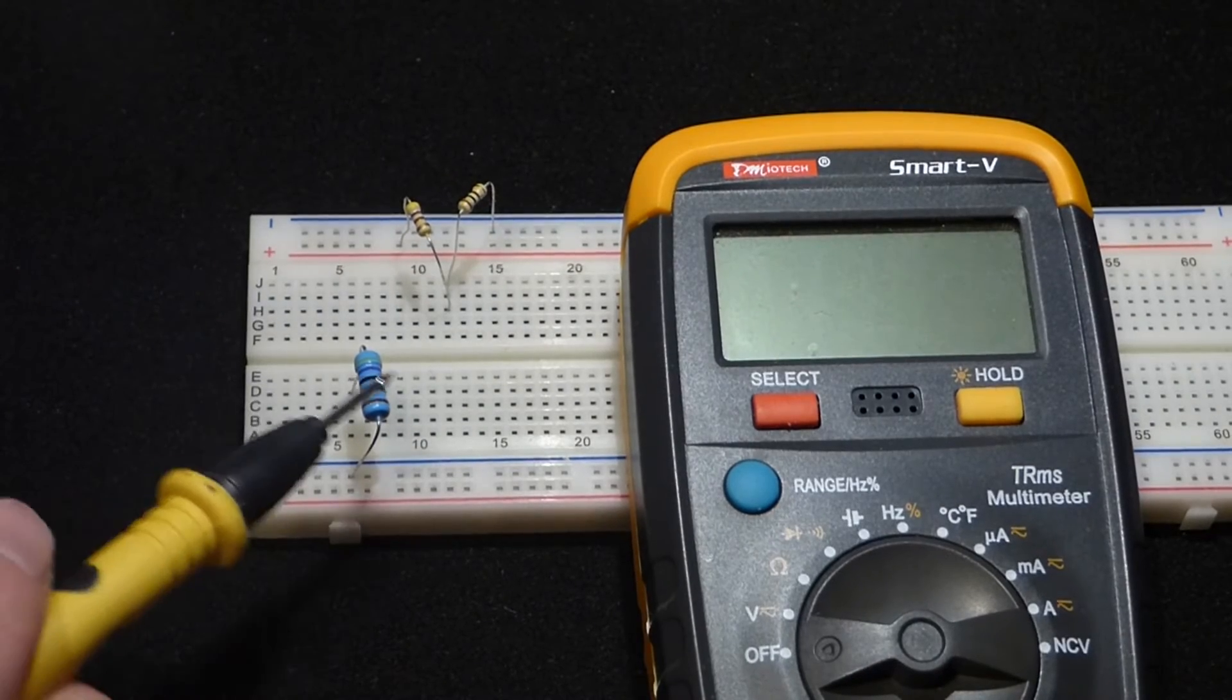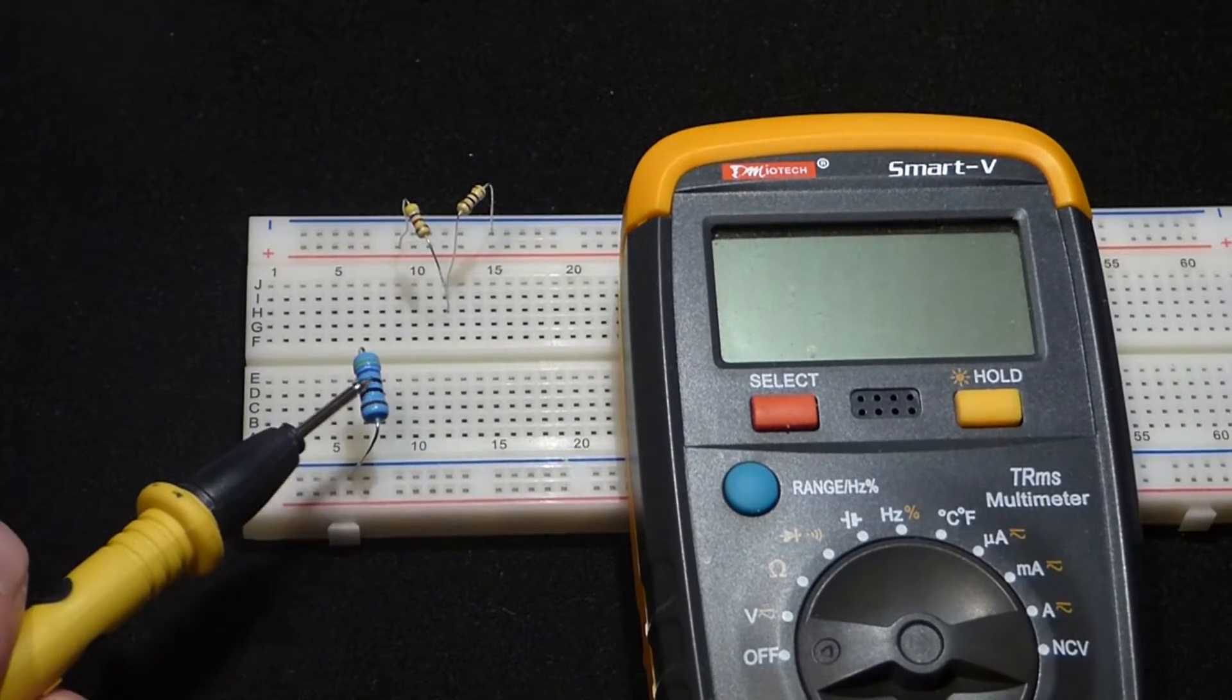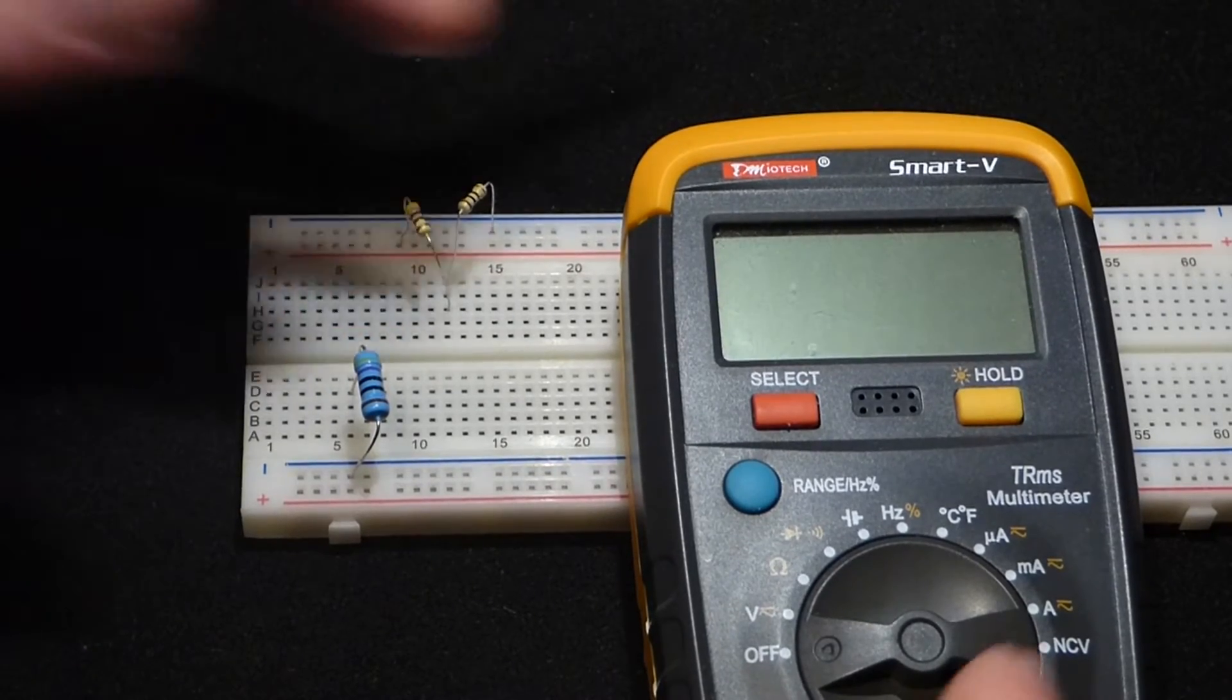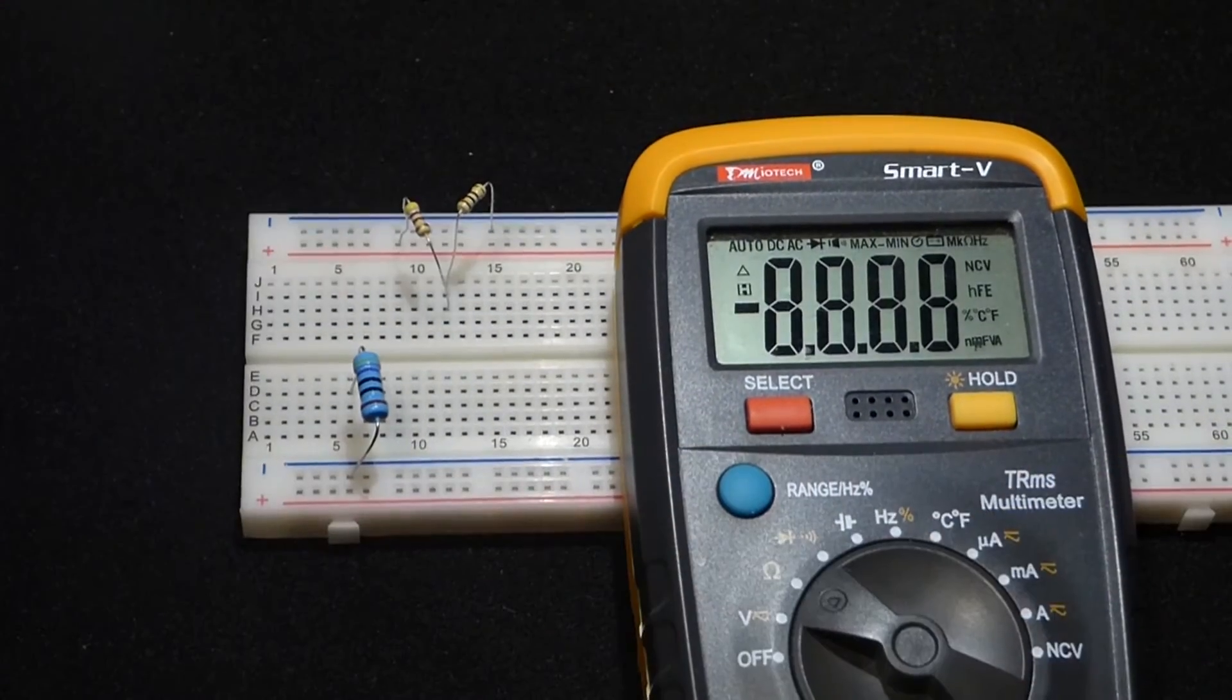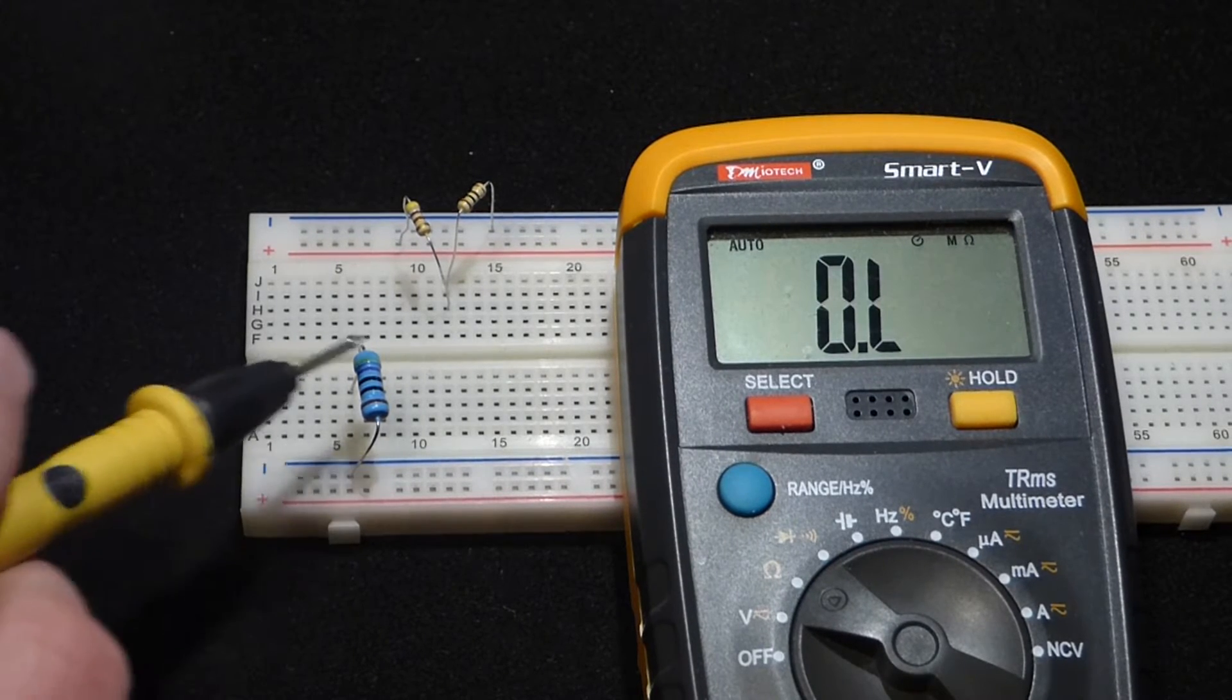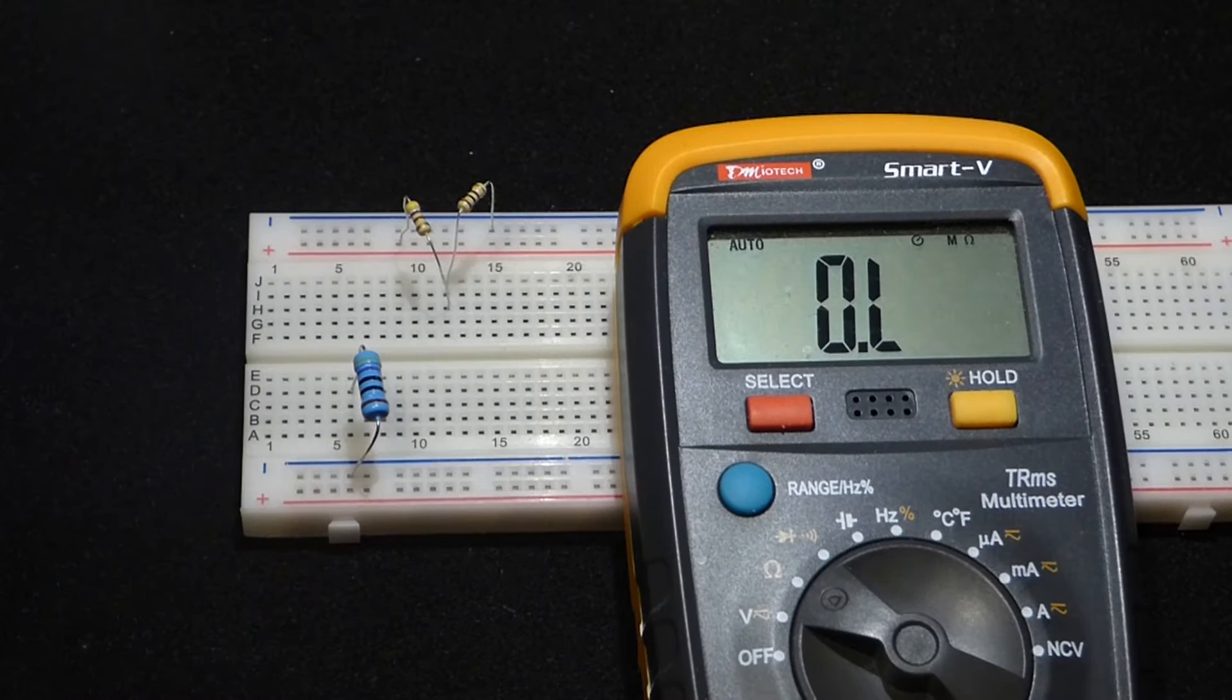In a recent video, I showed you that when I put this 470 ohm resistor and this 470 ohm resistor in parallel to a battery so that each one gets the same voltage from the battery.